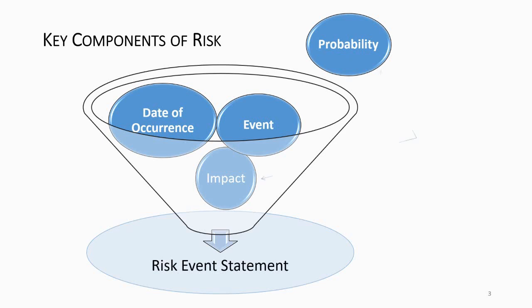Look at the probability and impact together and that gives you the priority. What should we be doing about this risk? Is it something that we need to look at today, or is it something that we can set aside and just monitor?